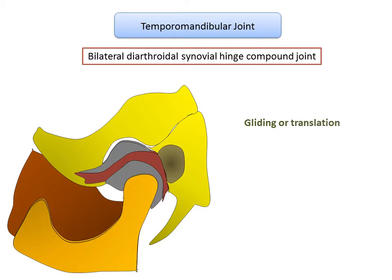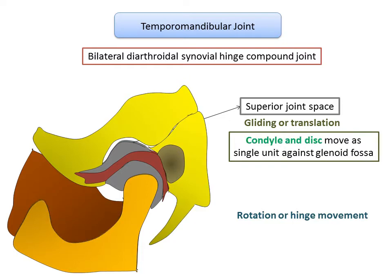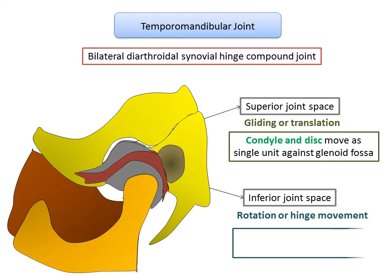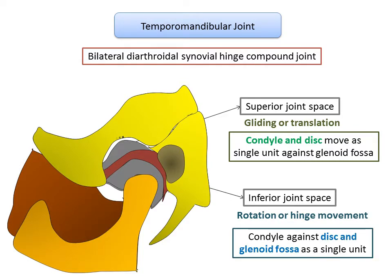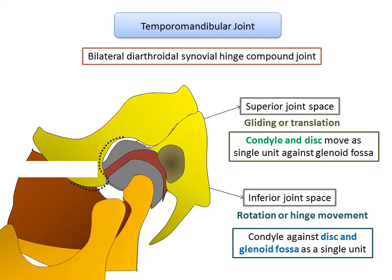The temporomandibular joint exhibits two types of movements: rotation or hinge movement, and translation or gliding movement. The upper compartment shows anterior-posterior gliding movement, where the condyle and disc move as a single unit against the glenoid fossa. The lower compartment shows hinge movement, where the condyle moves against the articular disc and glenoid fossa acting as a single unit. The slope of the glenoid fossa is not straight but S-shaped, so the condyle moves along an S-shaped path. This shape, which determines the path of condylar movement, is called the condylar guidance.